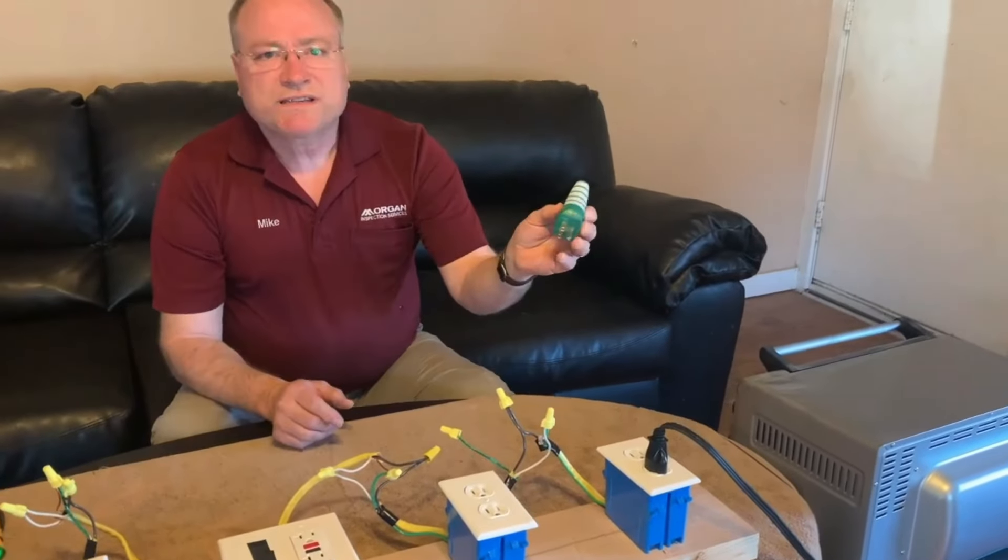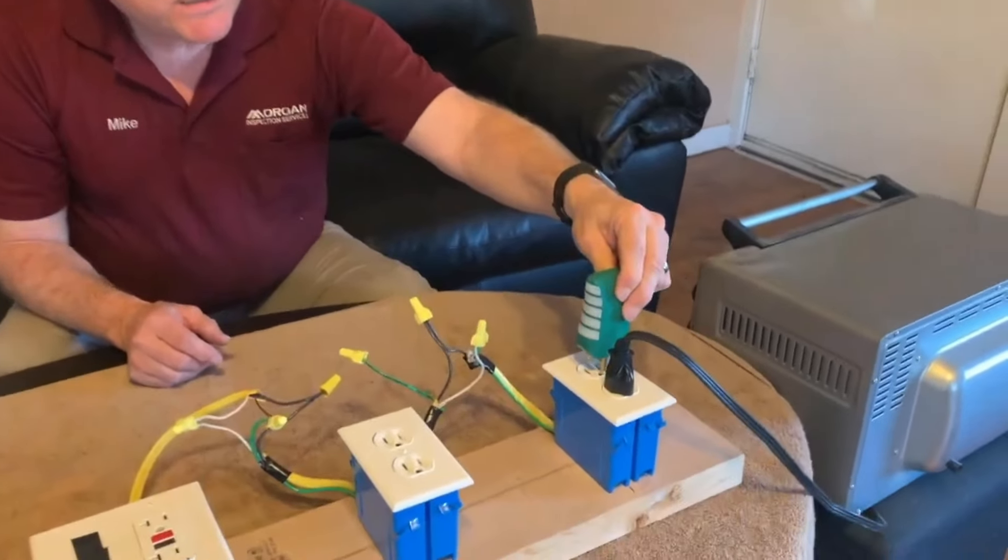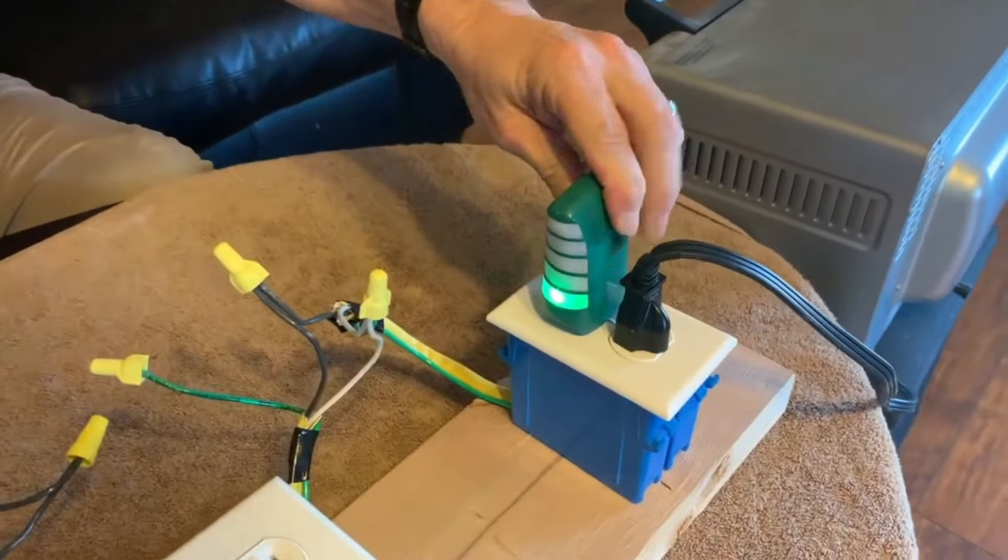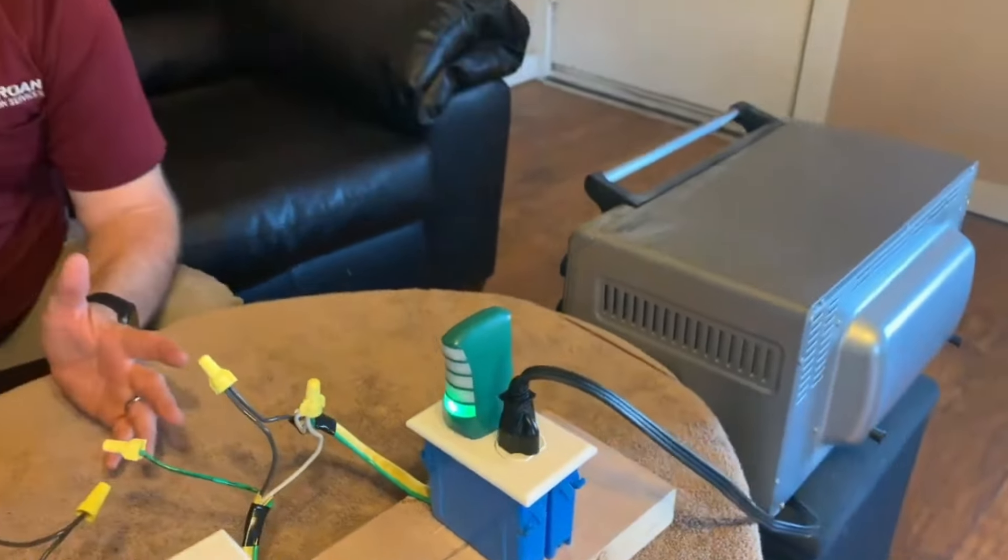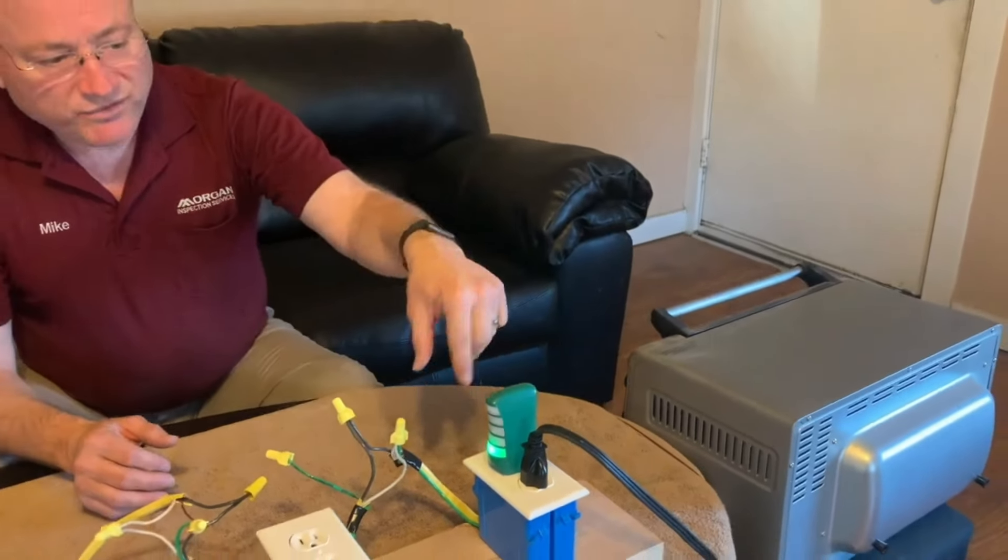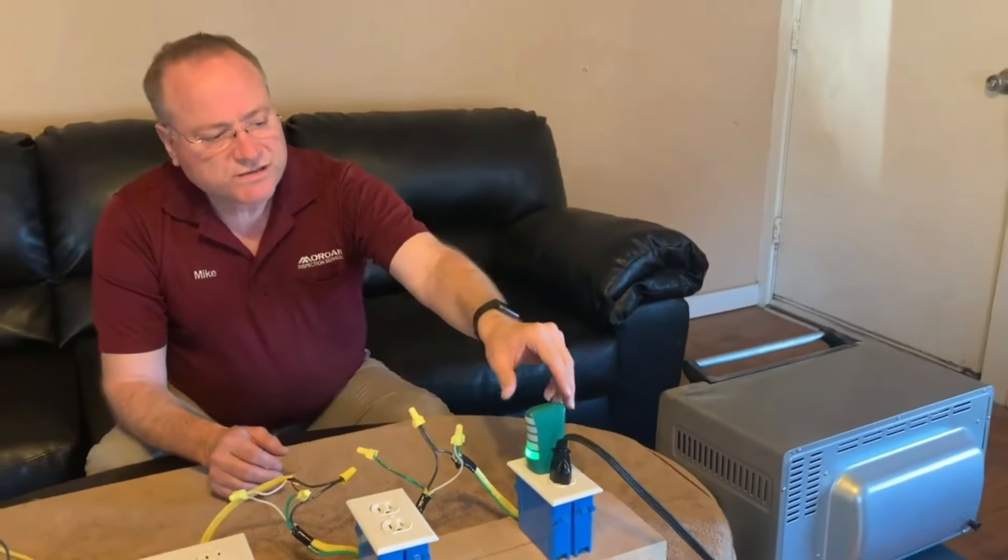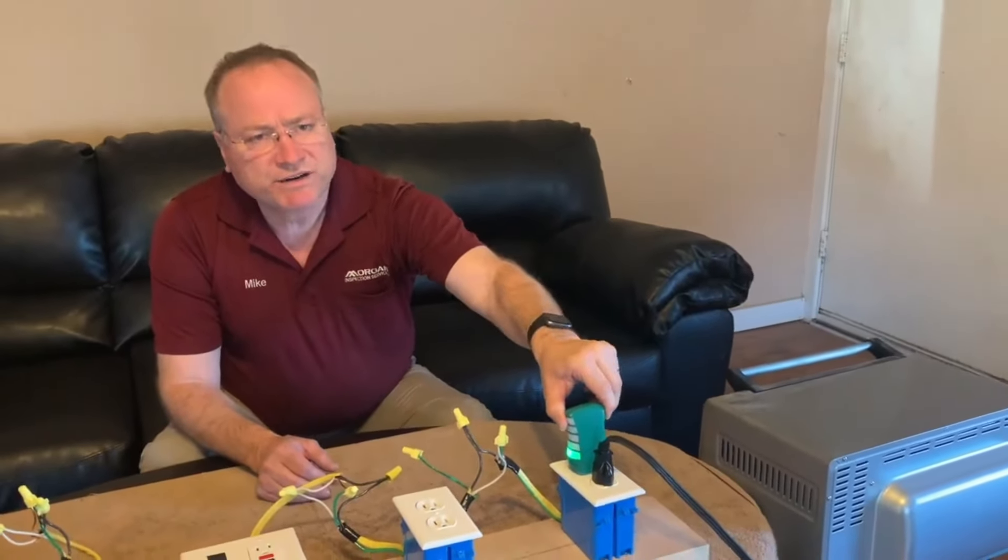If I use one of these standard three light testers to test this electrical outlet, the green light shows that that outlet is properly wired. However, we know it's not. That's one of the flaws with these three light testers is they can't pick up every situation.